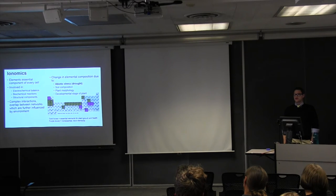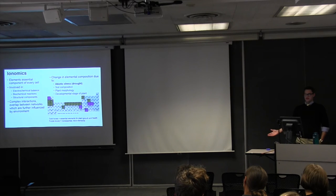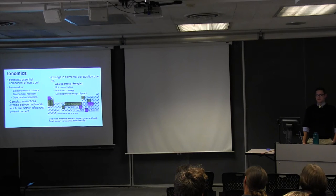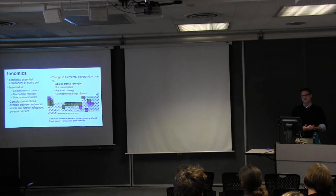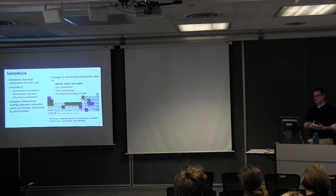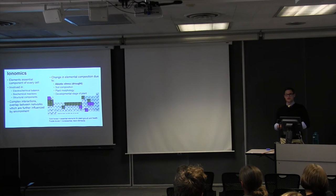And so one approach that we're taking to this is using ionomics. Basically every component of the cell contains elements and these elements are involved from everything from electrochemical balance, water regulation, osmoregulation, biochemical reactions, structural components, they form complex interactions. There's all sorts of overlap between the different networks in terms of ion transporters that can transport both types of ions but those ions are selectively transported based on local pH. And so what's exciting for us though is that the change in elemental composition can be influenced by, in this case, abiotic stress or drought, soil composition, plant morphology, as well as developmental stage of the plant. And so what we're hoping to do is kind of capitalize on this abiotic stress. And down here at the bottom is a table of periodic elements and those ones in the gold boxes are the essential elements for plant growth. These are the ones that we are collecting data on in our ionomics panel. The purple ones are non-essential trace elements but they do give us an idea of what's occurring in the actual soil environment.